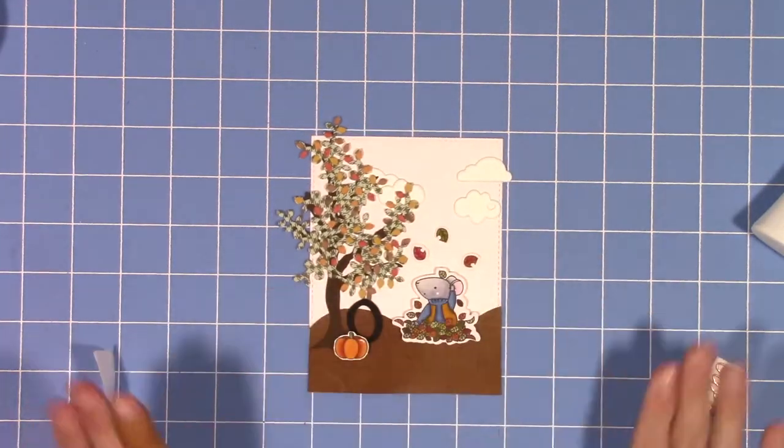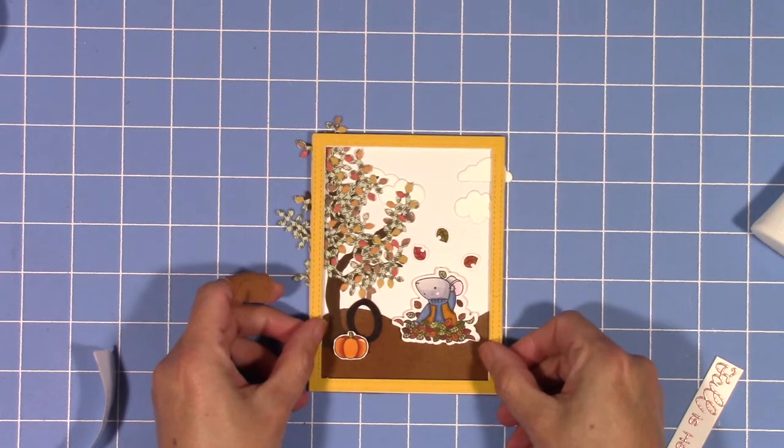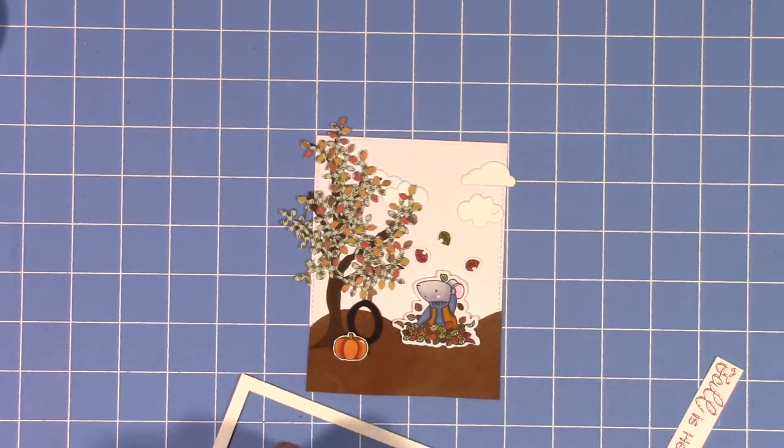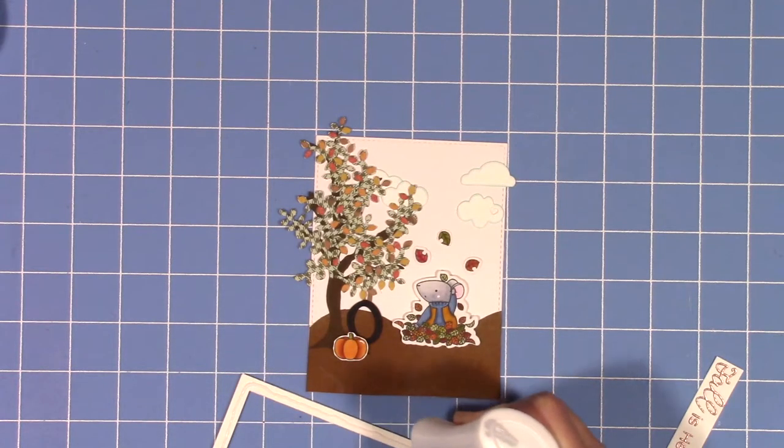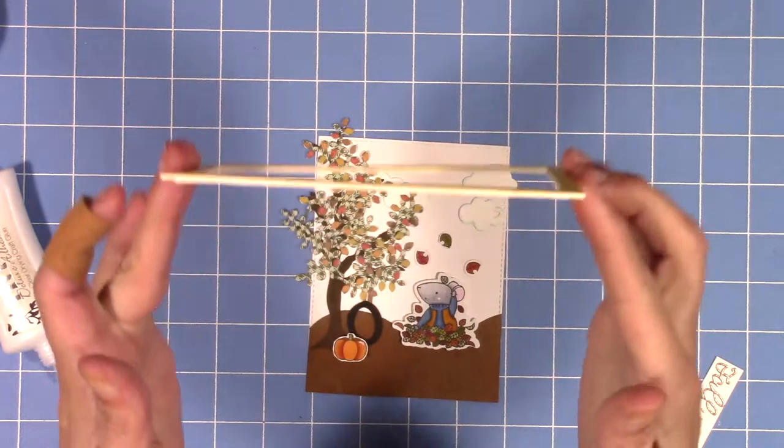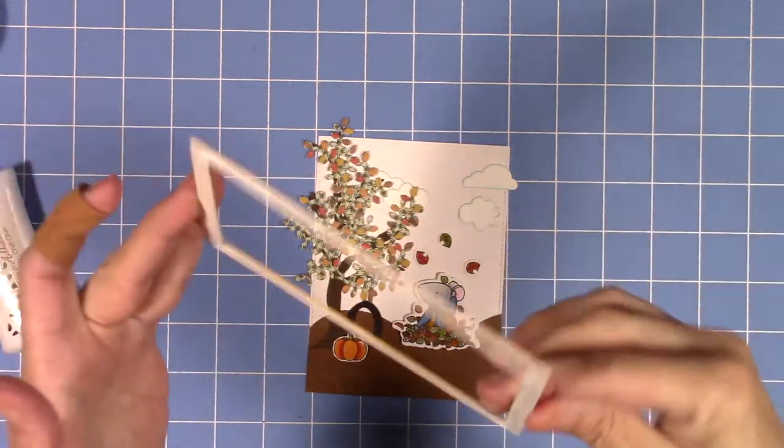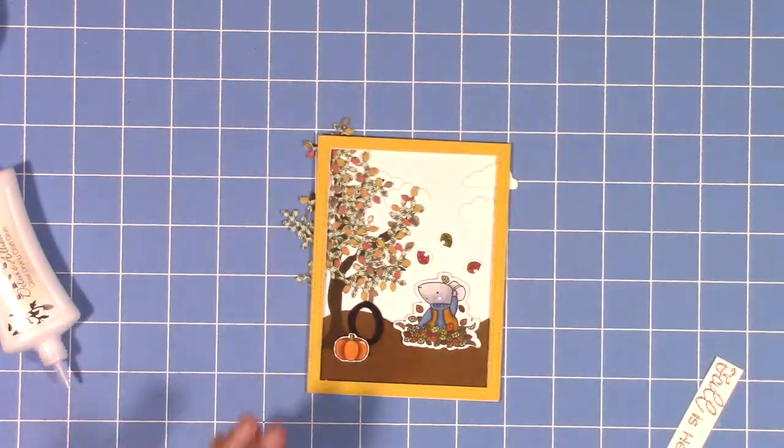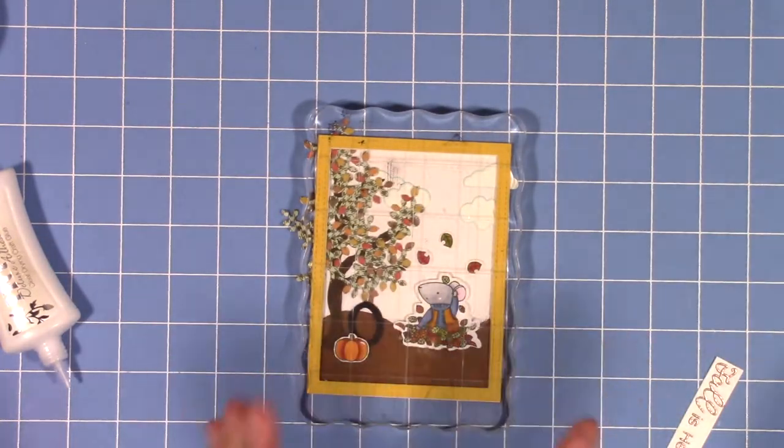For the frame I cut four of them, one yellow and three white, and then I just stacked them on top of each other to make it more sturdy. Then I'm just going to glue it down and trim off anything that's hanging over.